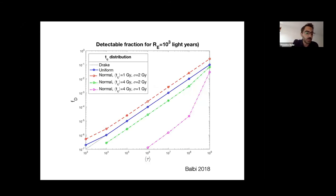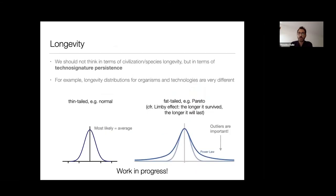You can also play around with different distributions. For short longevity, changing the appearance distribution changes the detectable fraction. But for Type C technosignatures with 10 to the 9 years duration, it doesn't make much difference how they are spread over the history of the galaxy. To wrap up: longevity is really the crucial point. We should focus on what are the most promising technosignatures in terms of persistence — not just civilization longevity, but technosignature persistence. A civilization may disappear, but it can leave an artifact or beacon that lasts for a long time, and that is the most promising thing to detect.